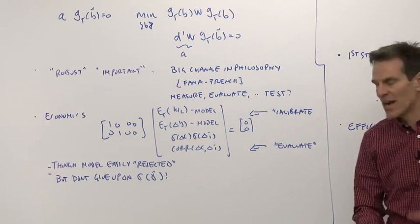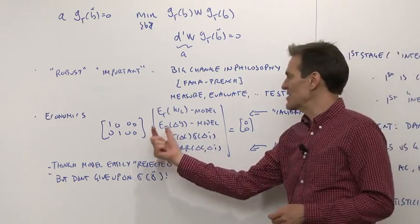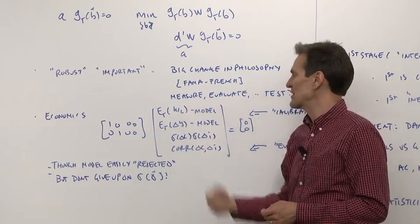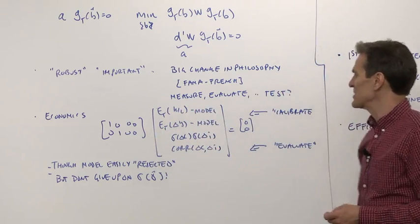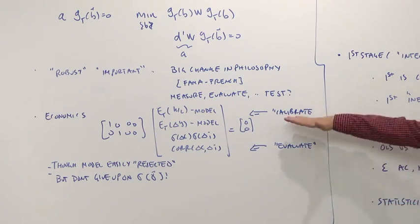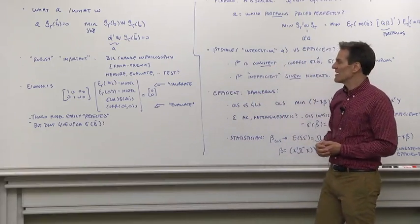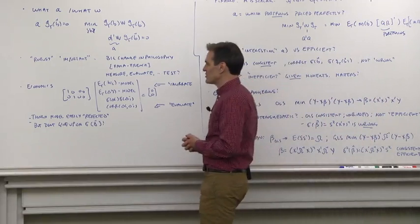Well, you can do that in GMM. Choose an A matrix where you use those moments in order to estimate the parameters, and then these become testing moments. But the calibrate and evaluate doesn't have to forget about econometrics. It doesn't have to forget about sampling variation.